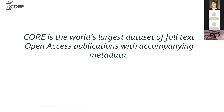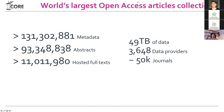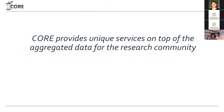In terms of the data we have, we've got about 131 million metadata records, 93 million abstracts, and more than 11 million full texts. This really gives you an idea of why OAI-PMH might not be particularly scalable for our purposes.